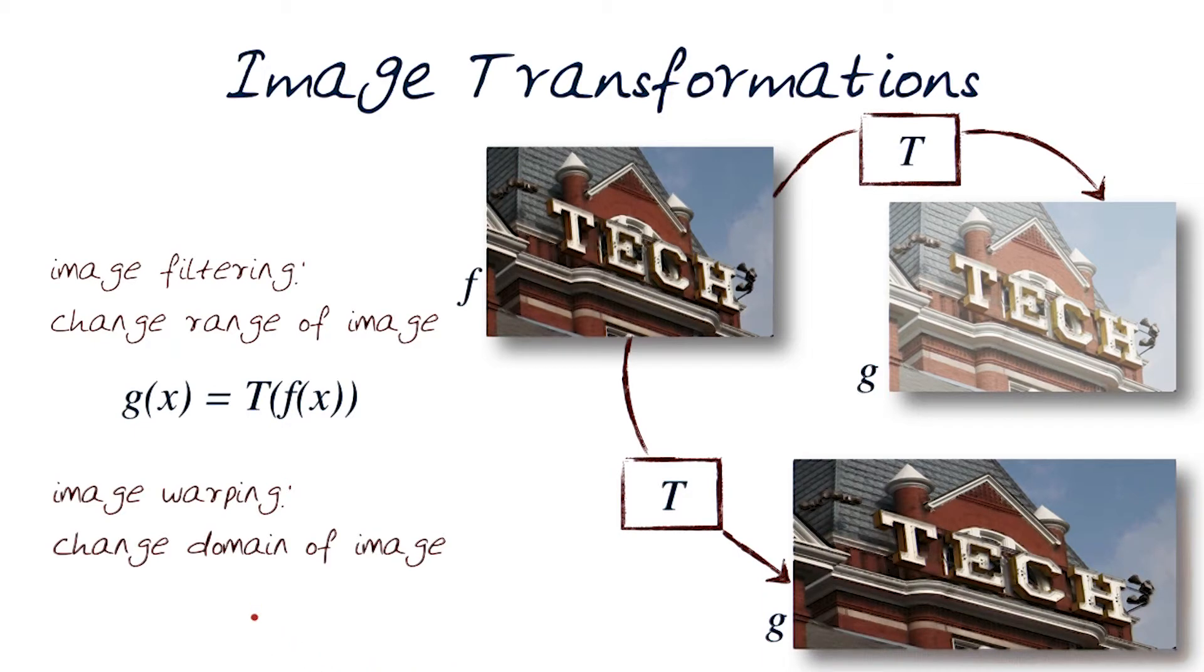To do this, we basically are now doing a transformation of the indices, that is the width and the height and all of the information associated with it, and that's changing the function. So the transformation in this one is the change of domain of the image, as opposed to change of range of the image.